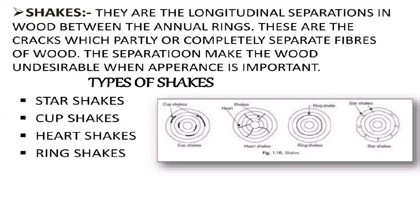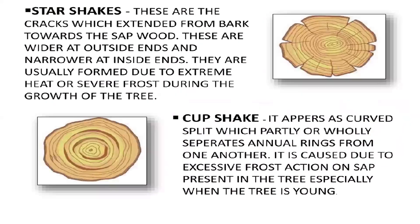The term 'annual rings' is used to determine the age of the wood — however many rings there are, that is the age of the timber. Star shakes: this diagram represents star shakes which appear like a star in the outer line. These are cracks which extend from the bark towards the sapwood, wider at the outside ends and narrower at the inside ends. They are usually found due to extreme heat or severe frost during the growth of the tree.